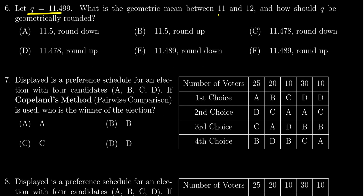Because you'll notice q sits between 11 and 12, so we're interested in what's the geometric mean of 11 and 12 as it relates to q. And then once you've calculated that geometric mean, how should q be geometrically rounded—should we round it up or down depending on the geometric mean?